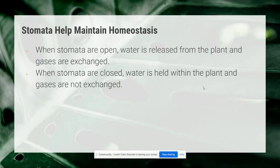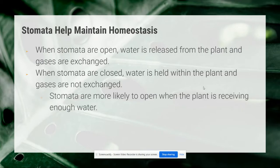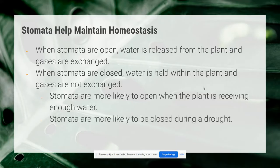Stomata are more likely to open when the plant is receiving enough water. If the plant has plenty of water, it's going to keep those stomata open because that allows it to exchange the gases it needs for photosynthesis and cellular respiration. However, if there's a drought and the plant is not getting enough water, the stomata are more likely to be closed. The plant closes its stomata to help maintain homeostasis, holding the water in so it can maintain the correct water levels.